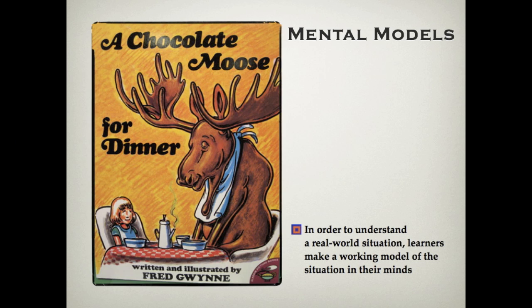In order to understand a real-world situation, learners make a working model of the situation in their minds, also known as a mental model. Kenneth Craig theorized that through experience, training, and instruction, a mental model is created. A series of books written by Fred Gwynn play on the inaccurate mental models created by young learners when they hear verbal phrases. For example, a child may misconstrue the meaning of the phrase, 'along with chicken, we are having a chocolate mousse for dinner.'